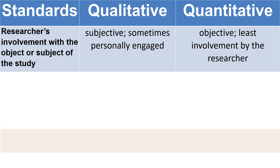For the researcher's involvement with the object or subject of the study, under qualitative research, it is subjective — researchers are sometimes personally engaged as they attempt to understand human actions and the causes behind such behavior, tending to get subjectively absorbed in the subject matter. Whereas under quantitative research, there is least involvement by the researchers, as it seeks only detailed measurements and analysis of target concepts to address its inquiry.